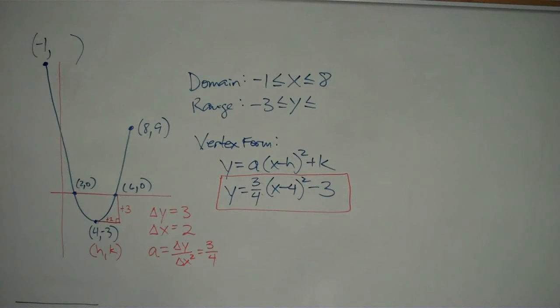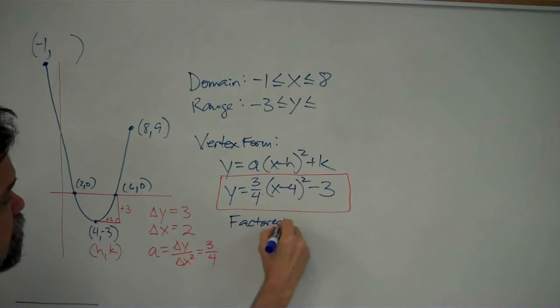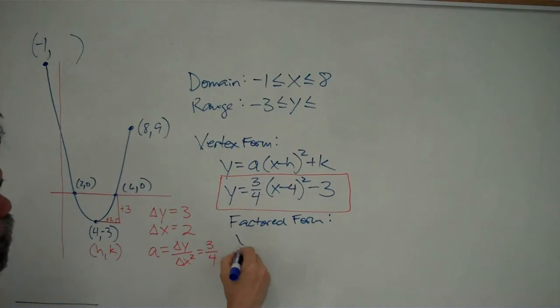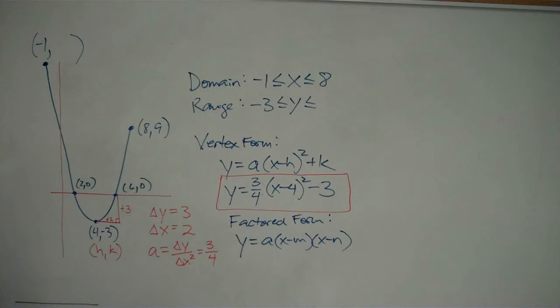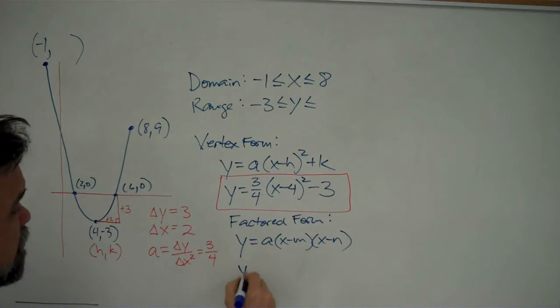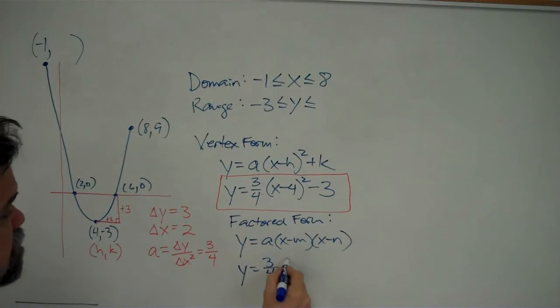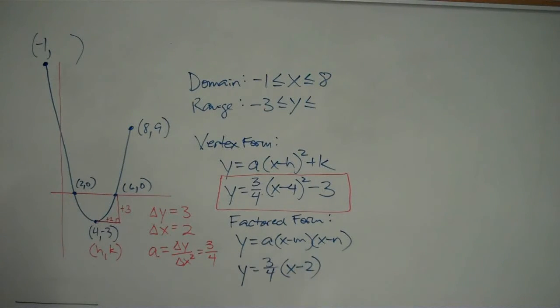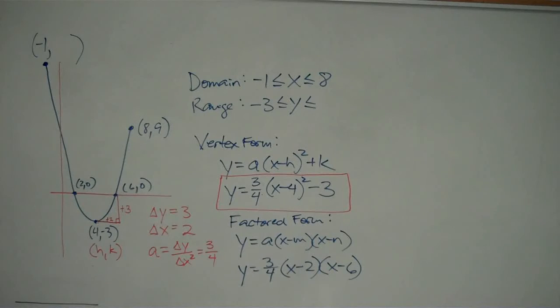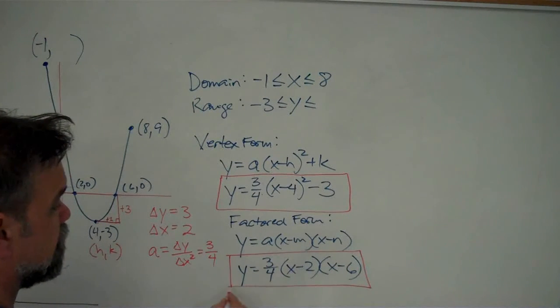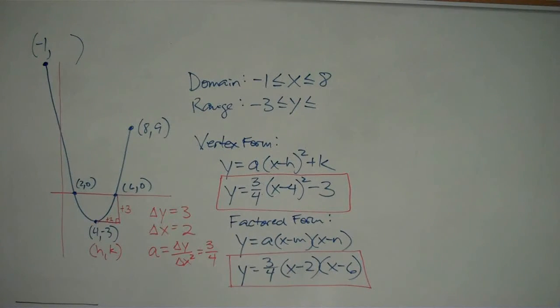This also gives us factored form as well. Because factored form is y equals a times x minus m times x minus n, where m and n are the x coordinates of our two x-intercepts. So that tells me I have y equals 3 fourths times x minus 2 times x minus 6. And that is factored form.